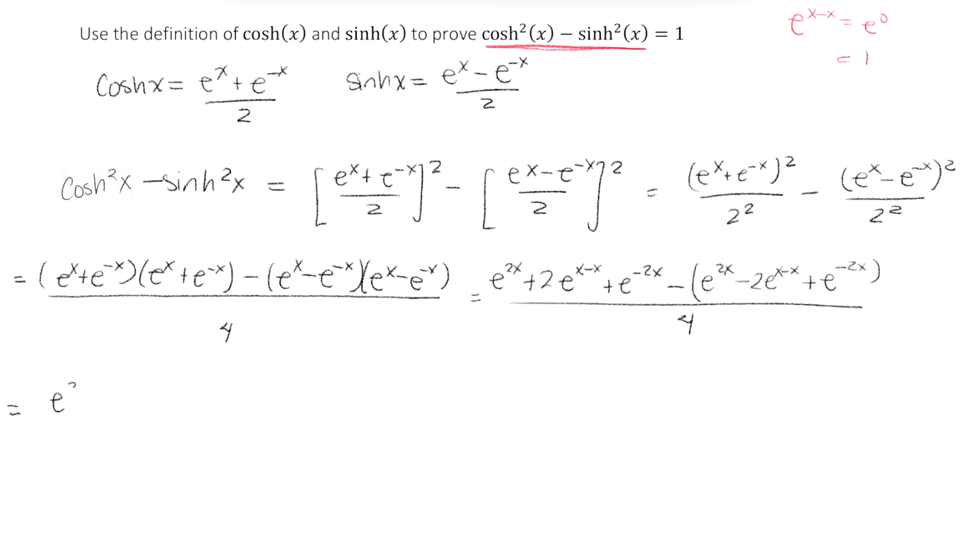That is, I have e to the 2x plus 2 plus e to the negative 2x. And now that became a 2 because, again, e to the x minus x is just 1. So this became a 2 here.